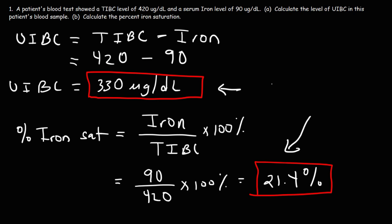And so in this example, the other 78.6% is associated with the UIBC level, the unsaturated iron binding capacity. Because if you take 330, divide it by 420, and multiply that by 100, you'll get 78.6%.